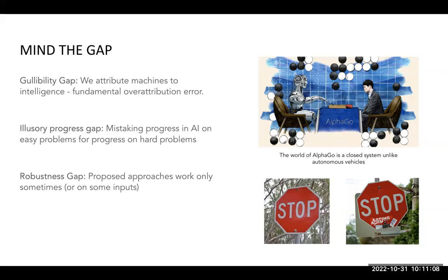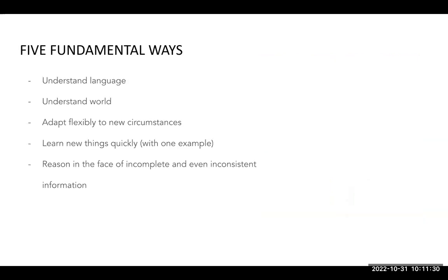The third is the robustness gap: proposed approaches work only sometimes or on some inputs. The classic example is a stop sign — a machine trained on stop signs predicted an image of a stop sign with stickers on it as a refrigerator with stickers.